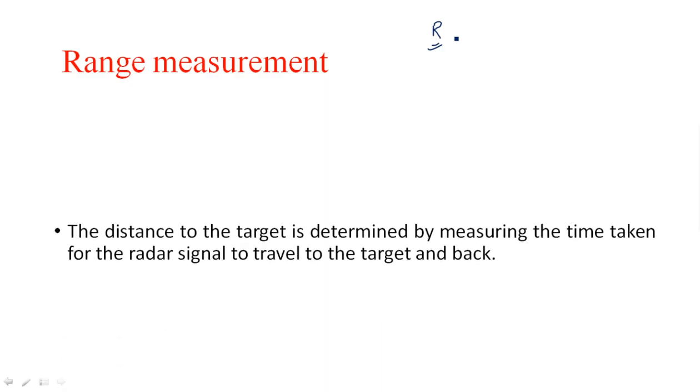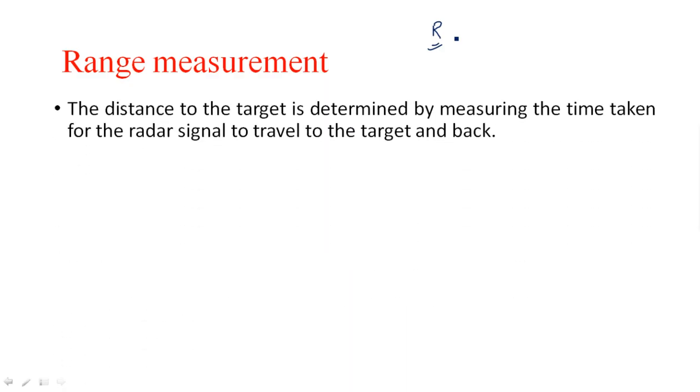Now, coming to radar range measurement — how range is calculated in simple terms. Range is nothing but distance. The distance to the target is determined by measuring the time taken for the radar signal to travel to the target and back.